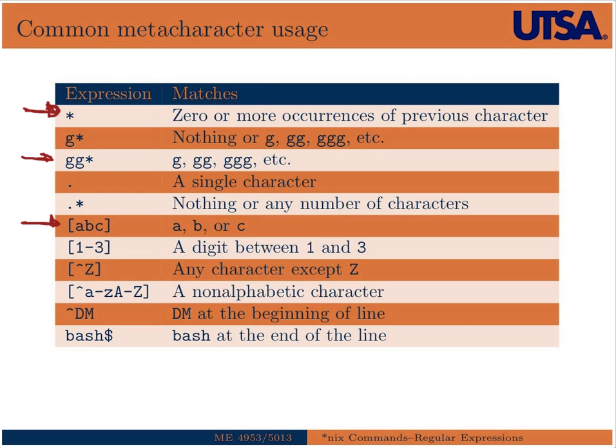We can use a hyphen to indicate a range, so [1-3] would match any digit in the range between 1 and 3. If we use a caret symbol — the hat symbol — inside of a bracket, that negates the action. So in this case, [^Z] would select any character except capital Z.